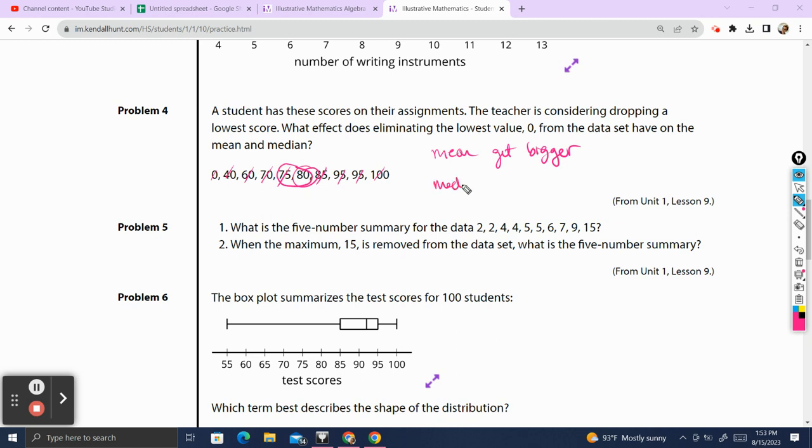So the median does get a little bit bigger, because when you have the zero, I apologize, we're getting rid of a value. So if we get rid of the zero over here, our median is going to shift slightly to the right. So in this case, our mean is going to get bigger, and our median is going to get slightly bigger.